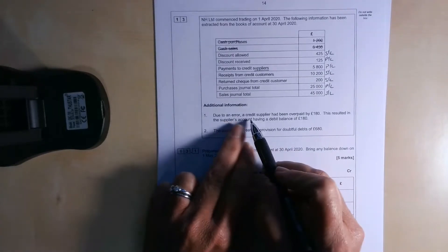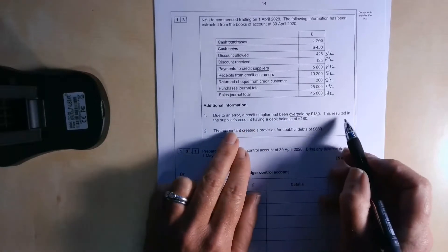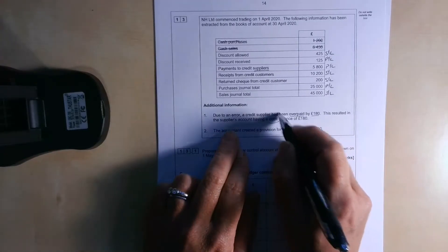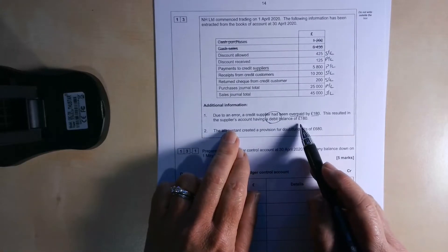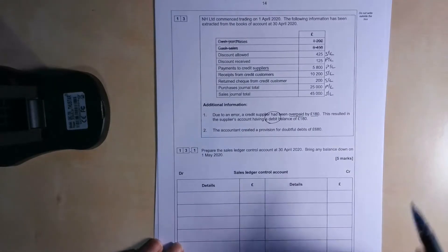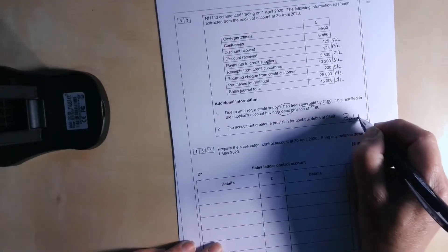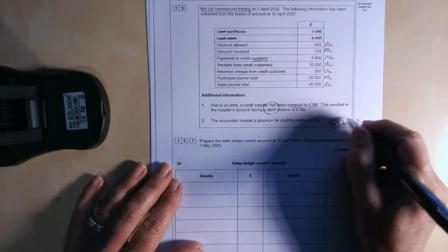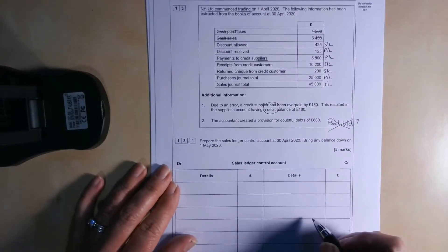Okay, it also tells us that due to an error, a credit supplier had been overpaid by £180. This resulted in the supplier's account having a debit balance of £180. Now, there's a little clue. So that suggests that this is an unusual occurrence, because we've overpaid the supplier, they've got a debit balance, generally, the balances would be credit balances. Okay, now, the interesting thing with this question is we haven't got any balances brought down. And this case, NH Limited have commenced trading. So that means there is no balance brought down. We just need to work out the balance carried down, which will be the balancing figure.